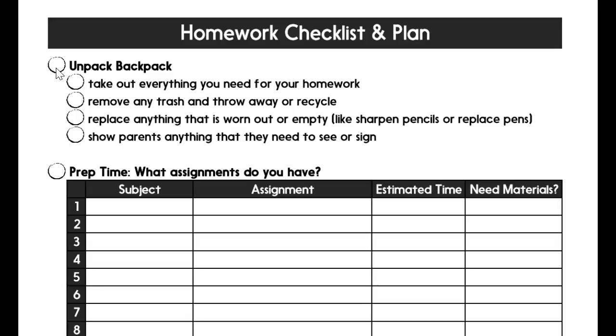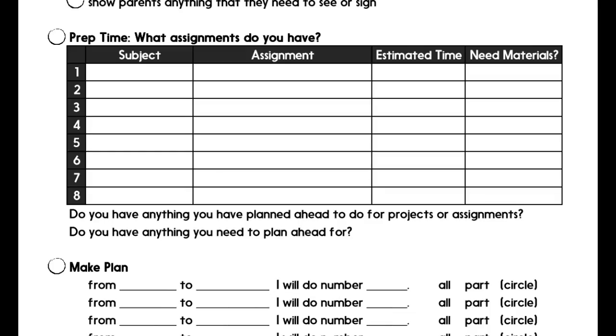The next step is the plan. The plan consists of two parts: first is the prep time and then making the plan. The prep time is where the child looks over what homework they have and writes it in this form. What's the subject? Maybe math, language arts, science, social studies, Spanish, whatever the class is goes in this column here. And then they write down what the assignment is, like page 23 numbers 1 through 15.